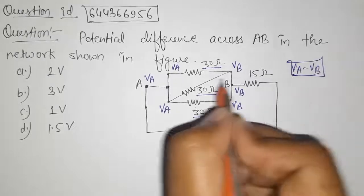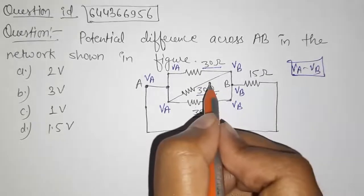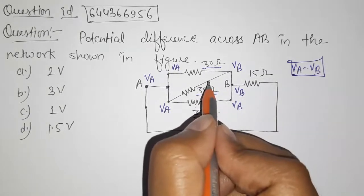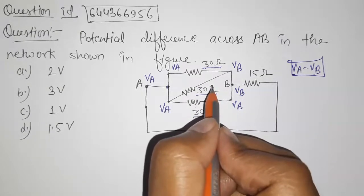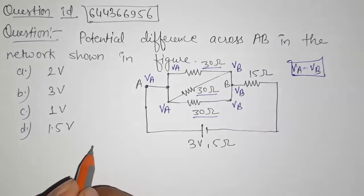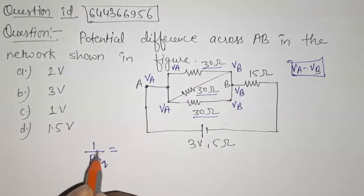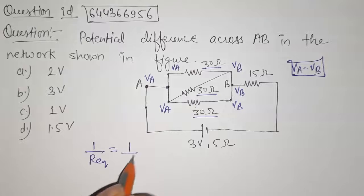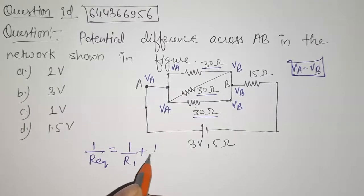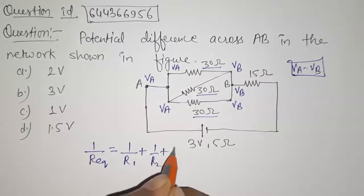That means these three resistances are in a parallel combination. The formula for equivalent resistance in parallel is: 1 upon R_equivalent equals 1 upon R1 plus 1 upon R2 plus 1 upon R3.